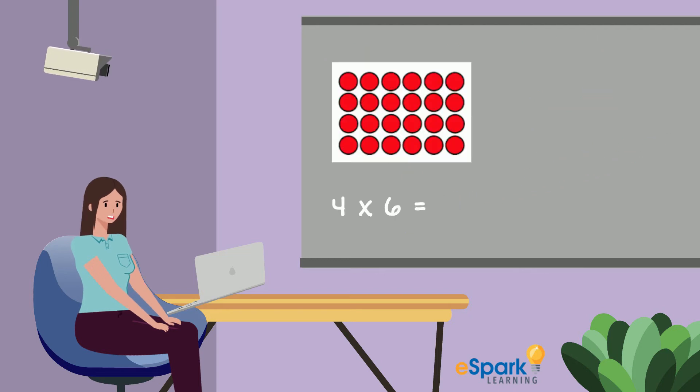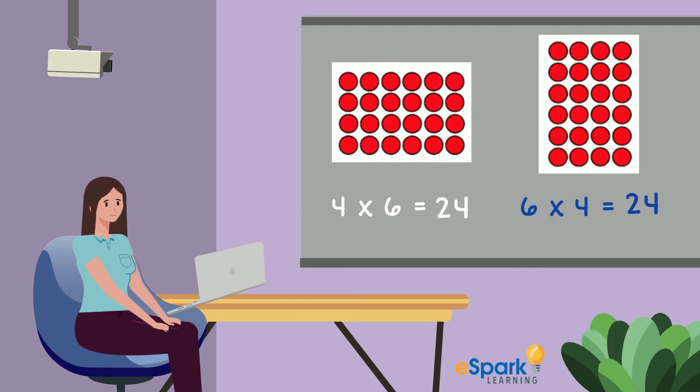See this 4 by 6 array? It has 24 dots. If I flip it into a 6 by 4 array, it still has 24 dots. 4 times 6 equals 24, and 6 times 4 equals 24. That's the commutative property of multiplication.